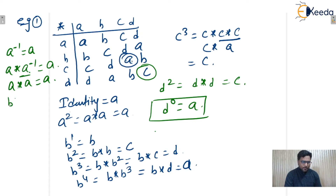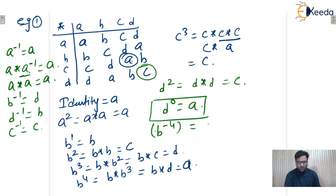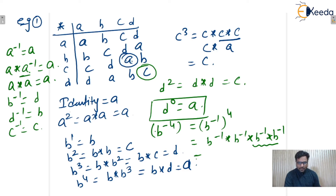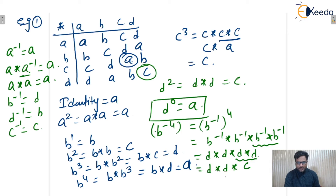B raised to power minus 4 equals B-inverse raised to power 4, which is B-inverse star B-inverse star B-inverse star B-inverse. Since B-inverse is D, this becomes D star D star D star D. D star D is C; then D star C is B; then D star B is A. So B raised to power minus 4 equals A.